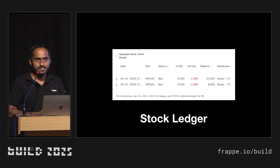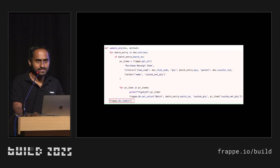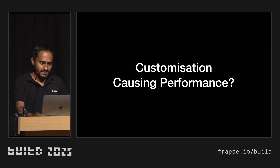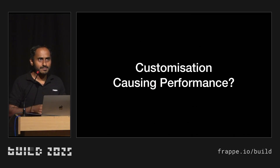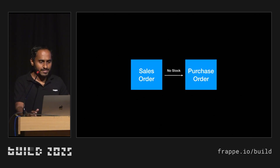So if you want to use frappe.db.commit explicitly, make sure it should not break the atomicity. Next: the customization was done properly and during UAT the user didn't face any issue. But once go-live was done, the user started facing performance issues.